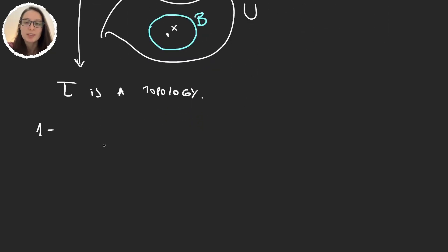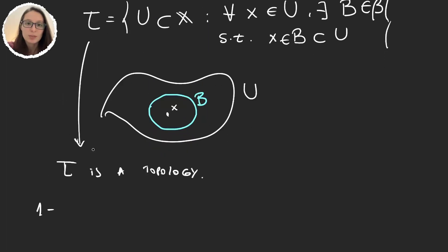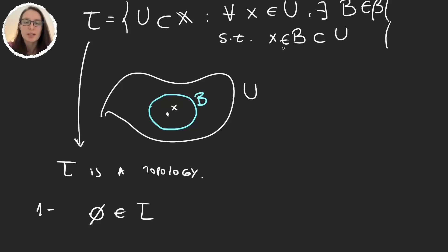The first property: the empty set and X must be part of the topology. For the empty set — well, when I start the sentence 'for every x in the empty set,' whatever comes after that is trivially true. So the empty set is in the topology.